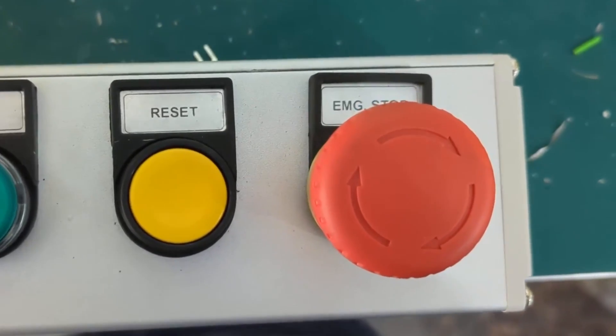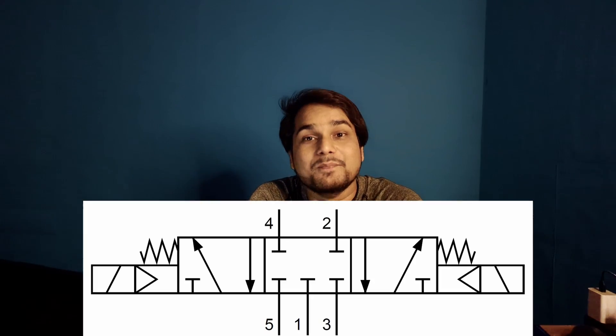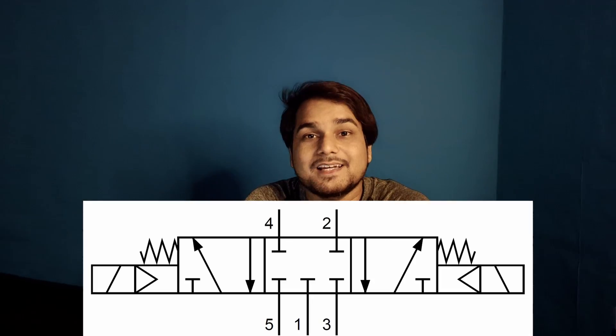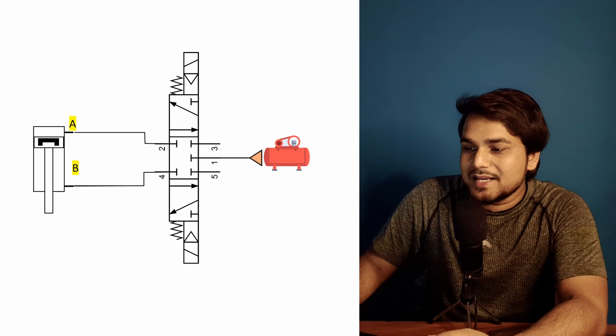What if you want to stop the pneumatic cylinder somewhere between the top and bottom — for an emergency or as a functional requirement? For that we cannot use the 5/2 directional control valve, because a 5/2 valve can only operate in two positions: position 1 the cylinder goes up, position 2 the cylinder goes down. We need a third position — a state where we can stop the cylinder — and that we can achieve with a 5/3 center closed valve.